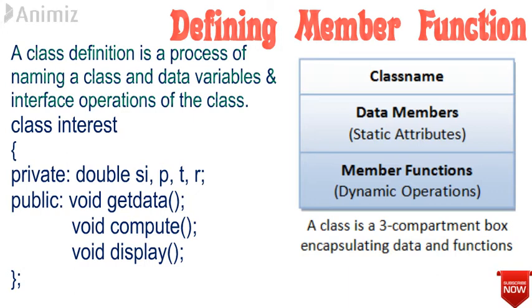Under private, double SI, PTR is the data member. The members are SI and PTR. We have three member functions under public: void get_data, void compute, and void display. So in this class, the class name is interest, data member is SI and PTR, and the member functions are get_data, compute, and display.